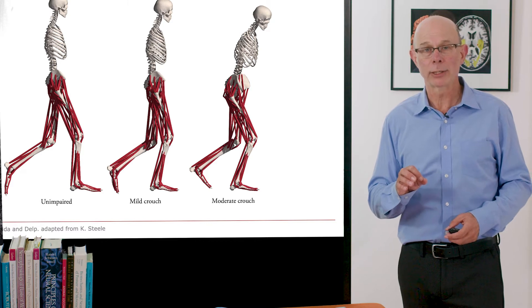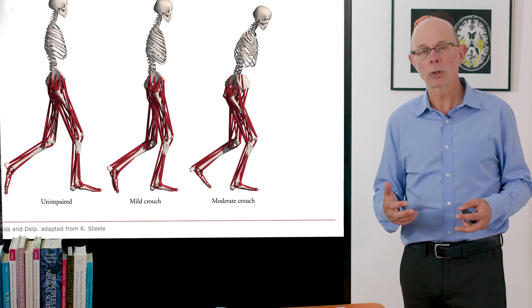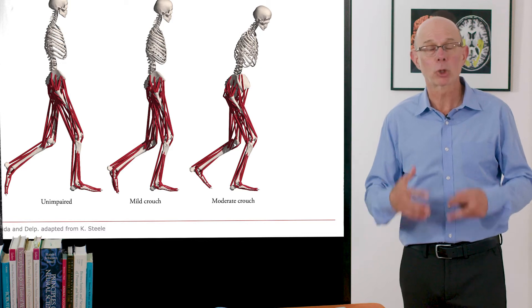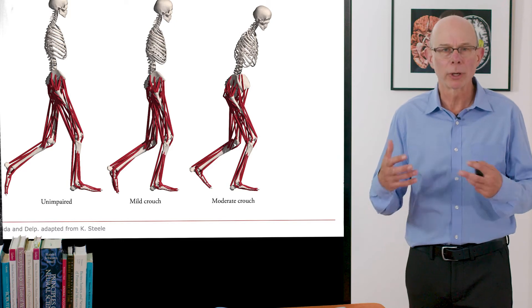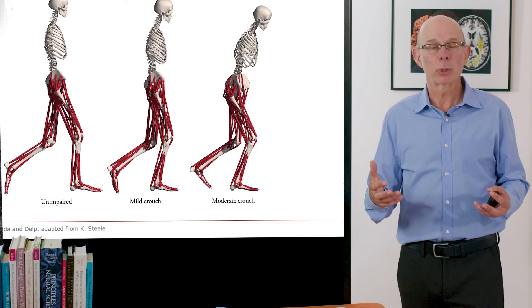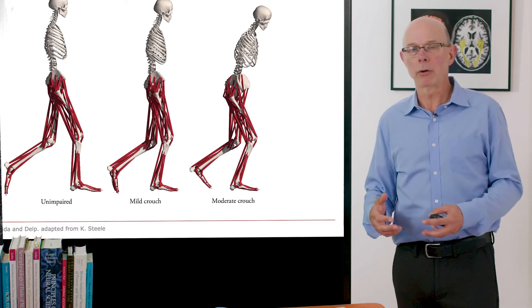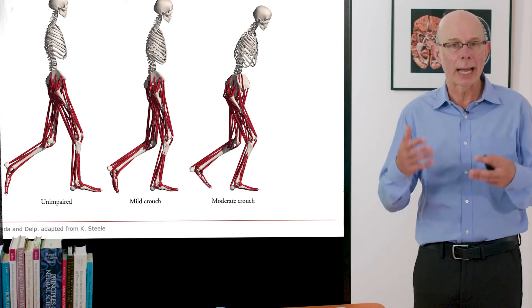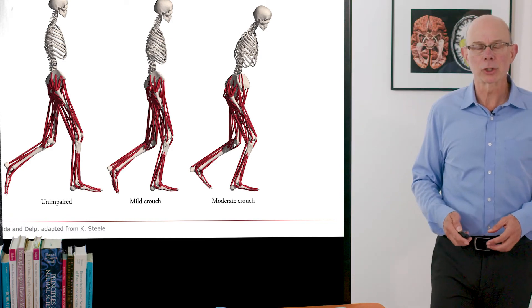Now these muscle-driven simulations were based on experimental data of individual subjects who had crouch gait, but they give us much greater ability to analyze what's happening under the hood, what the muscle forces are, what the joint forces are, and cause-effect relationships like is there diminished body weight support or if we strengthen a particular muscle would that help their crouch gait?